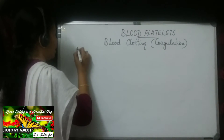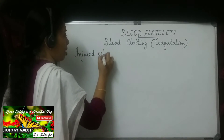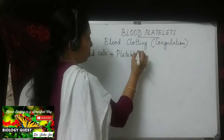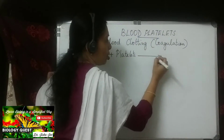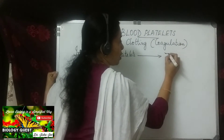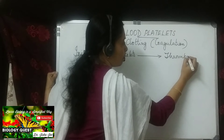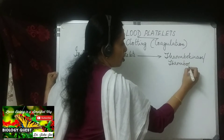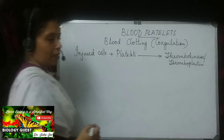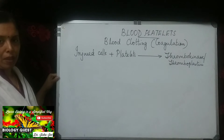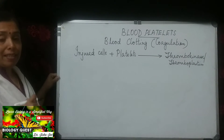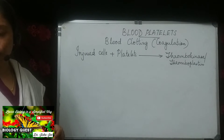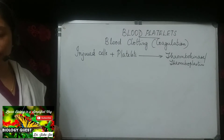At the injured region, the cells get injured together with the platelets. These platelets present at the injured region get disintegrated to release a substance called thrombokinase, which is also called thromboplastin. This is the first step in blood clotting: at the region of the wound, the platelets disintegrate to release thrombokinase or thromboplastin.